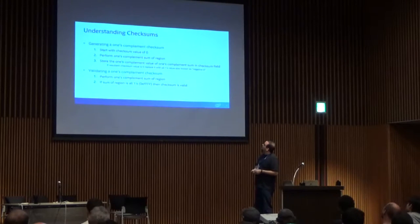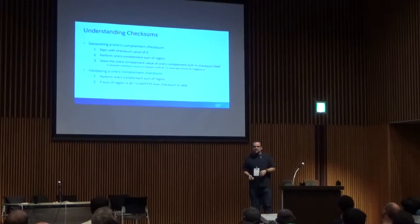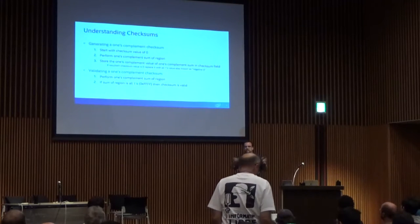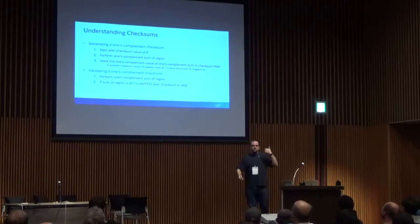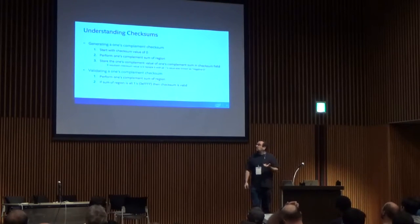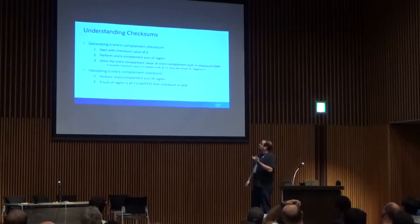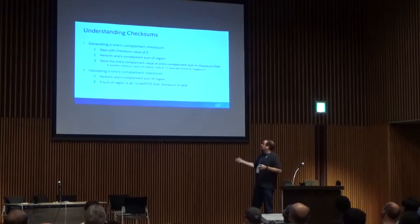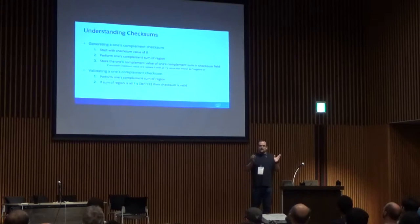In terms of generating the sums, for IPv4 you populate the checksum value with zero, sum the whole header, take the ones complement of that value, and store it as the checksum. To validate, you add the entire ones complement sum of the IP header and should get negative zero — the all-ones value — confirming the checksum is valid.